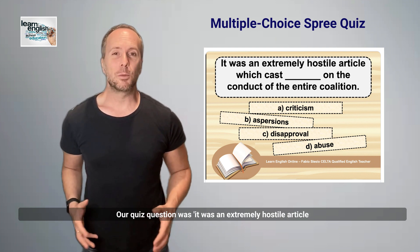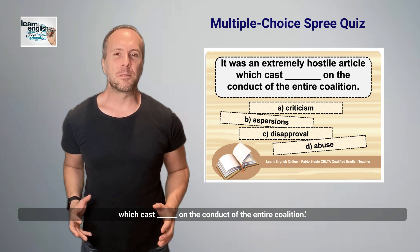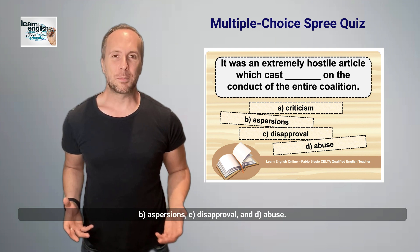Our quiz question was: 'It was an extremely hostile article which cast ___ on the conduct of the entire coalition.' Here are the answer options: A) criticism, B) aspersions, C) disapproval, and D) abuse.